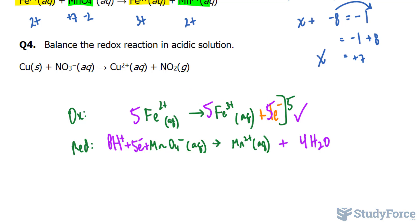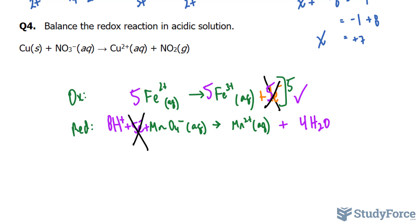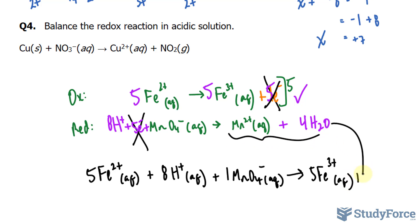If we add the 2 equations together, these electrons and these electrons will cancel out, leaving us with, in the reactant side, 5 Fe2+ molecules plus 8 hydrogen molecules plus 1 manganate molecule, and this yields 5 Fe3+ and the rest of these written here.